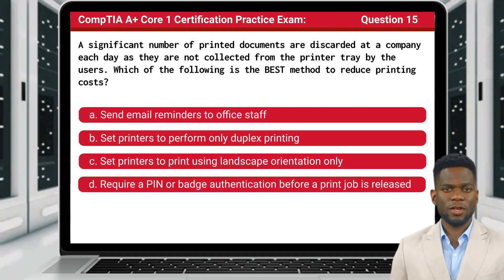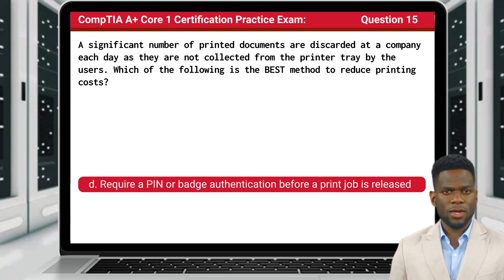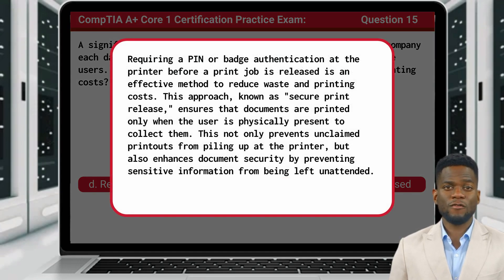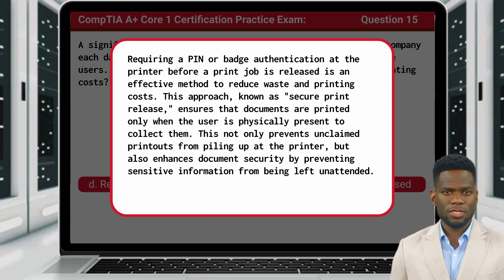Question 15. A significant number of printed documents are discarded at a company each day as they are not collected from the printer tray by the users. Which of the following is the best method to reduce printing costs? The answer is D: require a PIN or badge authentication before a print job is released. This approach, known as secure print release, ensures that documents are printed only when the user is physically present to collect them. This not only prevents unclaimed printouts from piling up at the printer, but also enhances document security by preventing sensitive information from being left unattended.